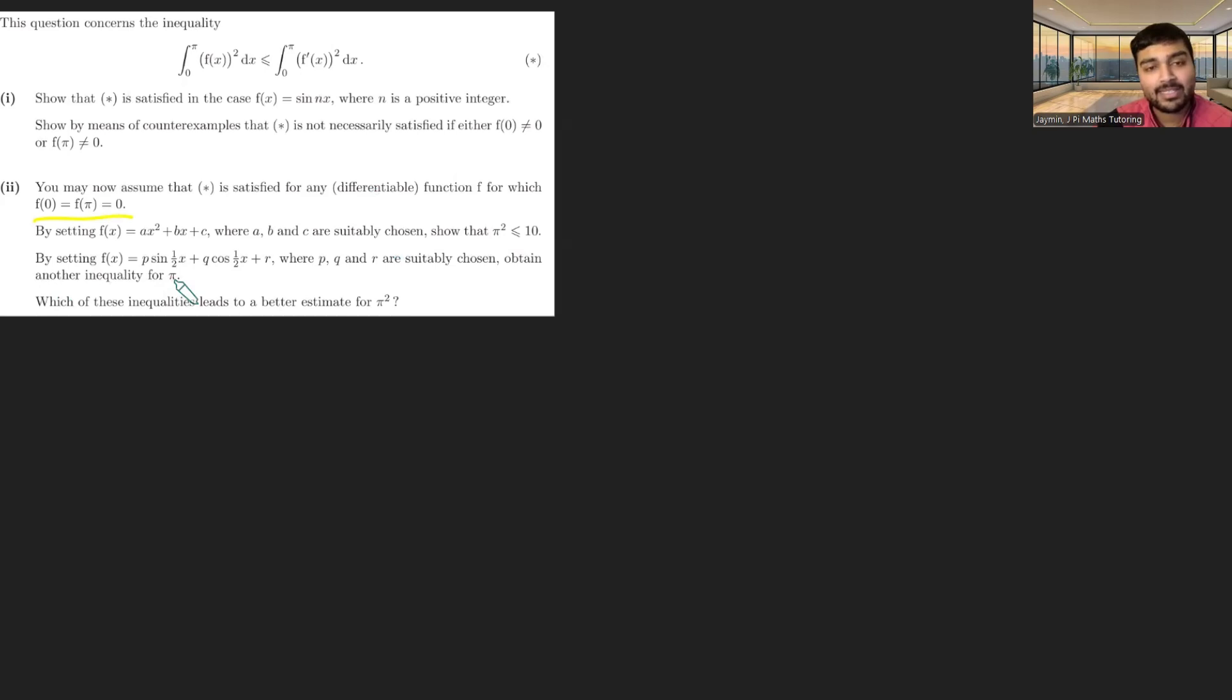And then by setting f(x) = p·sin(x/2) + q·cos(x/2) + r, where p, q, and r are suitably chosen, we want to obtain another inequality for pi. And we want to know which of these inequalities is a better estimate for π².